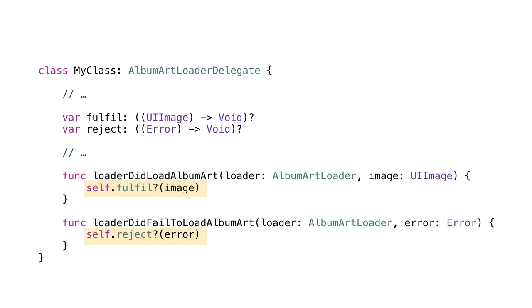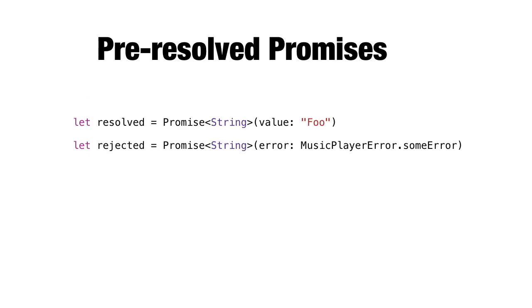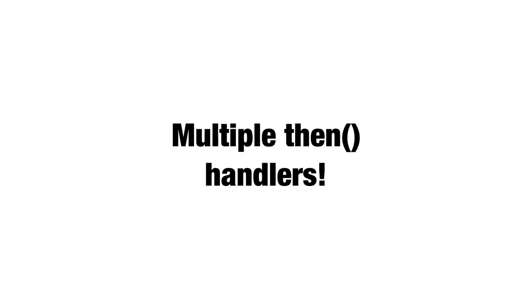We've looked at three different ways of creating promises. The rule is that you have to call fulfill or reject — just one of them, exactly once. Exactly how you go about it doesn't really matter. It's also possible to create pre-resolved promises — a promise already fulfilled with a particular value, or already rejected with a particular error. That's really useful when you write conditional code. So that's the end of part two. Now we know all about consuming and creating promises, but you'd be missing out if you stopped here because chaining is the best bit.